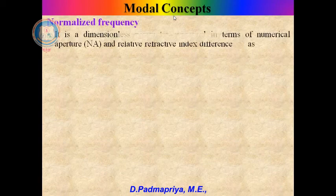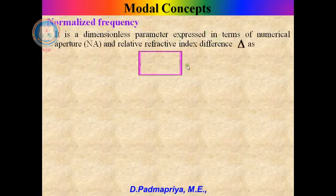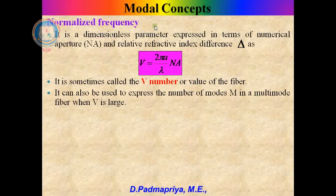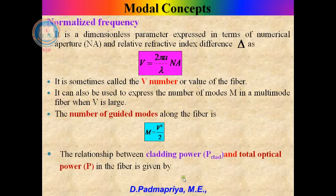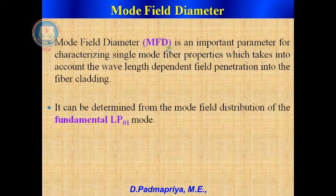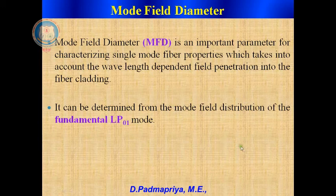Some important modal concepts: normalized frequency is a dimensionless parameter expressed in terms of numerical aperture and index difference, also called the V number. The formula is V = (2π/λ) × N1 × NA. The V number is mainly used to express the number of modes in a multimode fiber when V is very large; the number of guided modes is V²/2. The relationship between cladding power and total optical power is P_clad/P = (4/3)/√M. Mode field diameter is an important parameter used for characterizing single mode fiber properties, accounting for wavelength-dependent field penetration into the cladding, and is determined from the fundamental LP01 mode distribution.